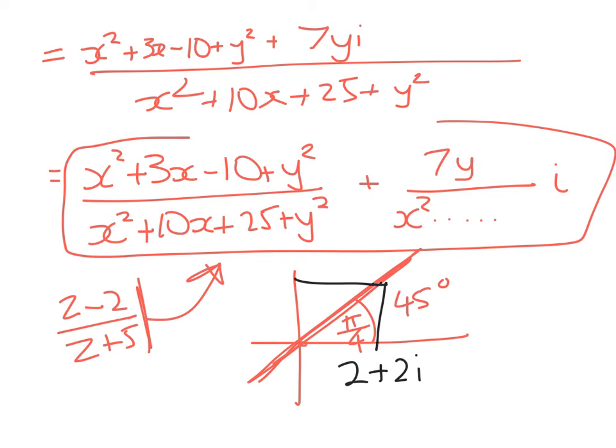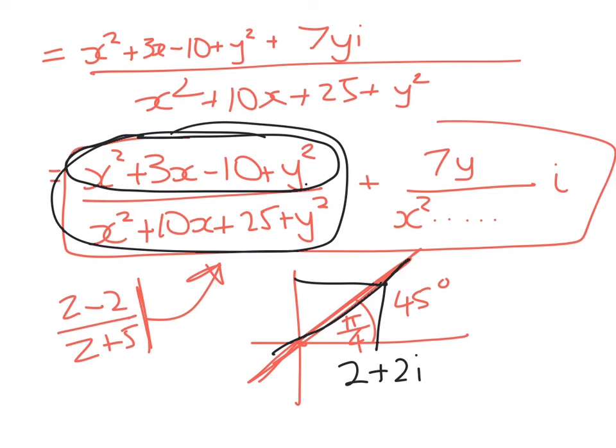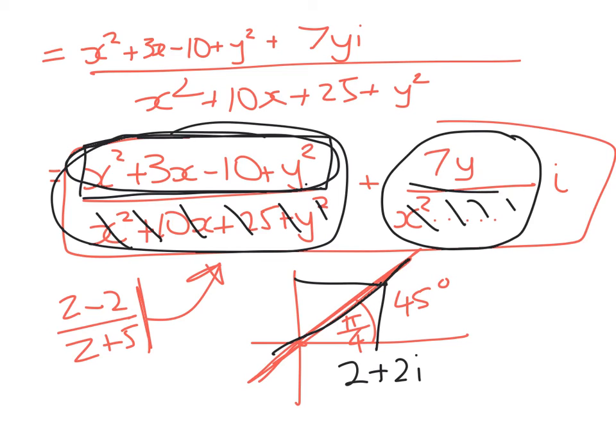So what does that let me do? Well, it means I can say the locus of points that satisfy that equation are where the real part and the imaginary part are the same. So because I've got the same denominator, I don't even have to worry about it. I can just multiply top and bottom through by that, and then I'm left with solving when is this equal to this.